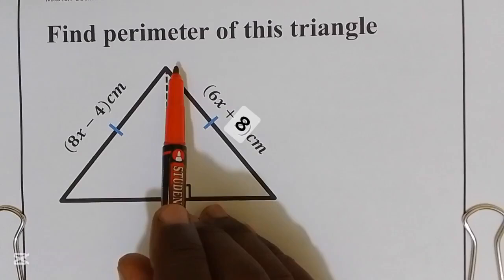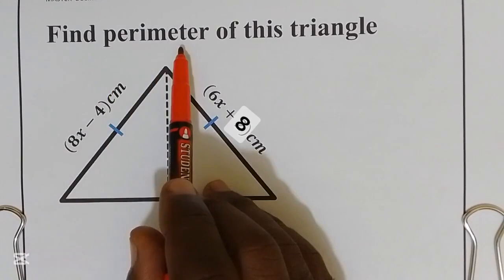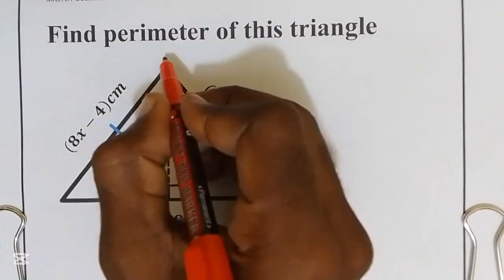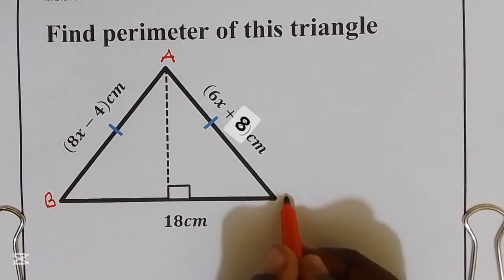This is an isosceles triangle and we are supposed to find the perimeter of it. I'm going to name this triangle as triangle A, B, C.